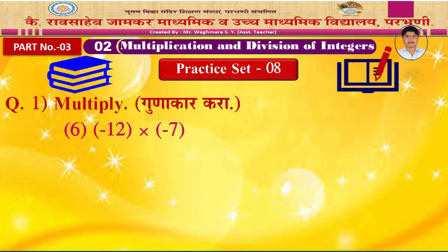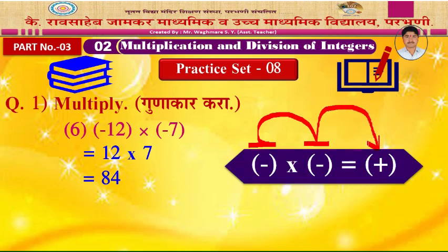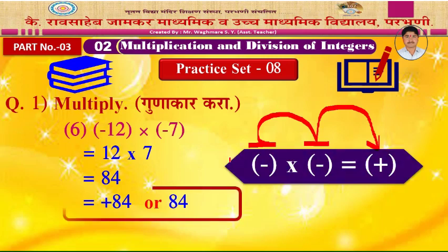Example 6: Minus 12 into minus 7. You may multiply without thinking about the sign — 12 into 7 is 84. Remember the rule: the first is negative and the second is also negative. Both numbers are negative, so the product is positive. Write the sign in the answer: positive 84, or simply 84.